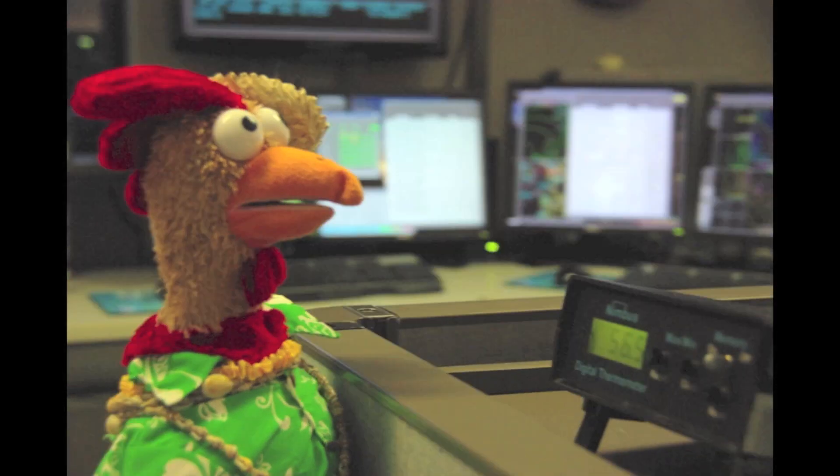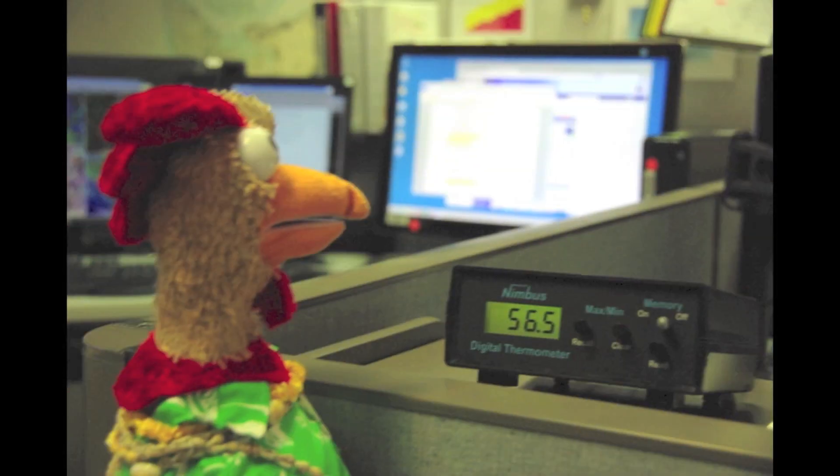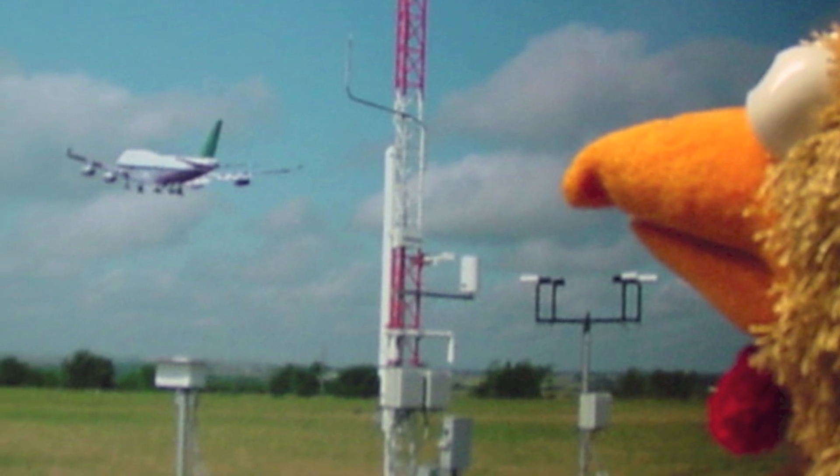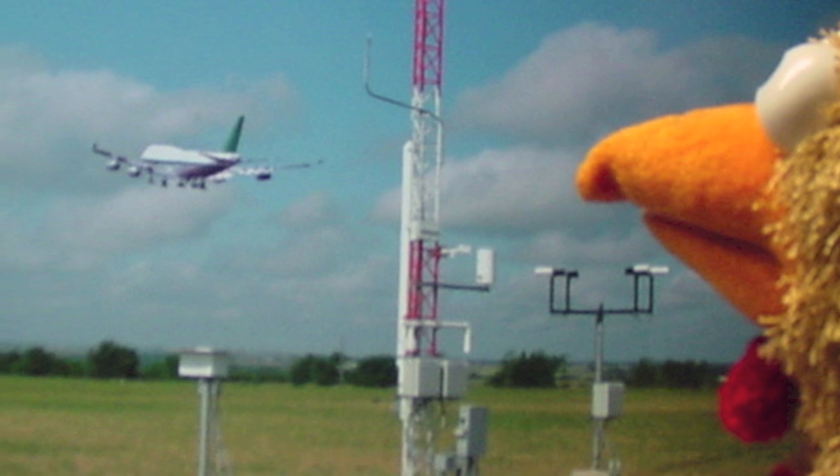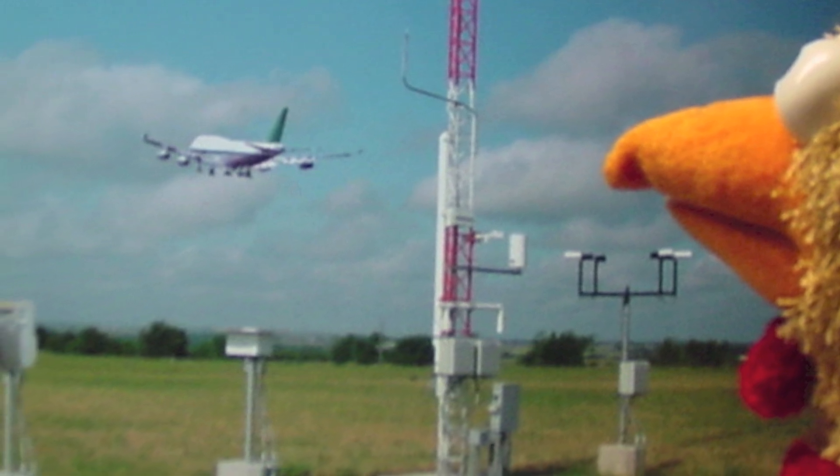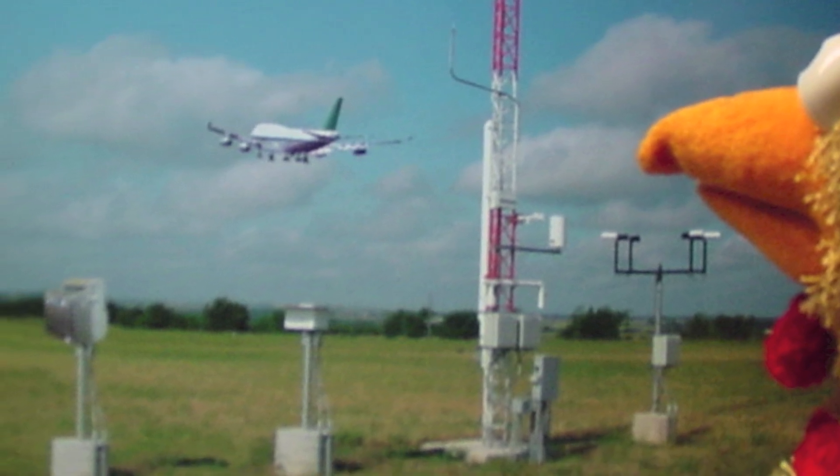Thermometers tell him the temperature, which measures how warm or cold it is. Automated weather observing systems measure a lot more about the weather, like air pressure, how much moisture is in the air, and how strong the wind is. Larry sure appreciates not having to stand outside all day to keep an eye on the weather.